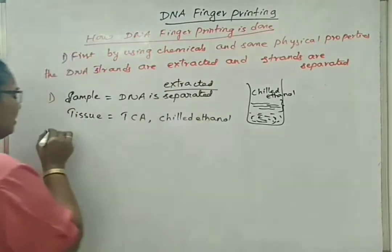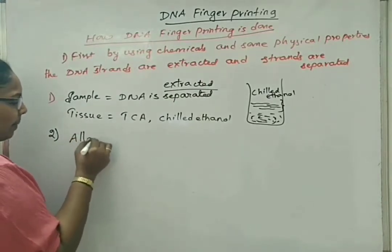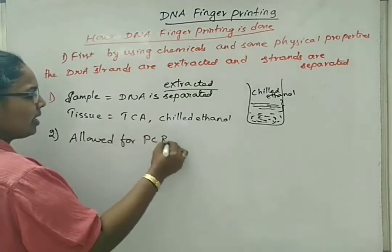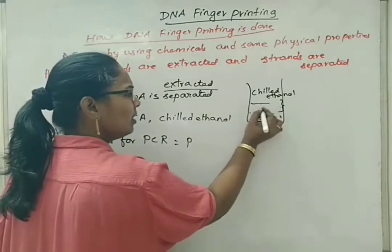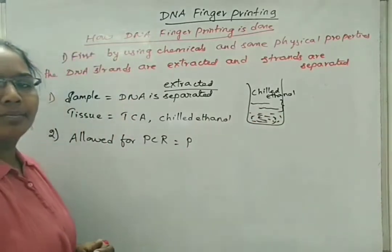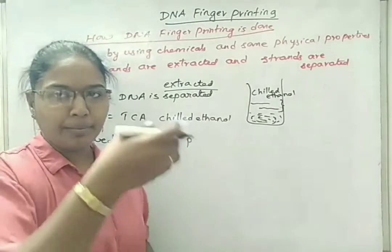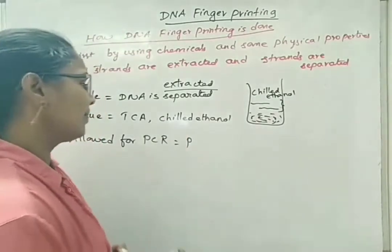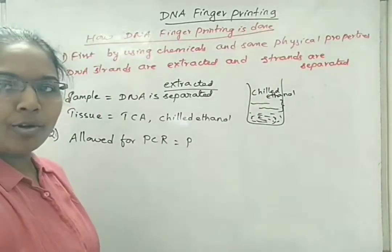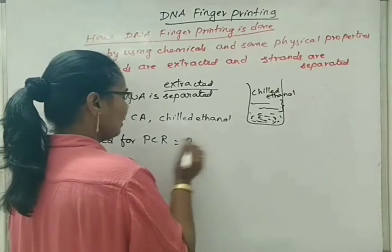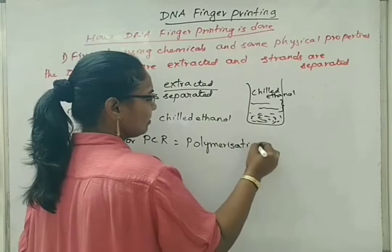The extracted DNA is next allowed for PCR technology — Polymerase Chain Reaction. If we have only two number of DNA fragments from the sample, we cannot do the experiment reliably. So we need many copies of available DNA strands. We allow them for polymerization, increasing the number of DNA strands using the PCR method.